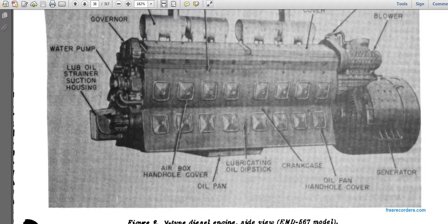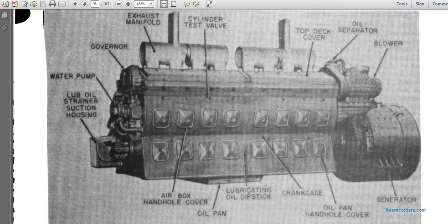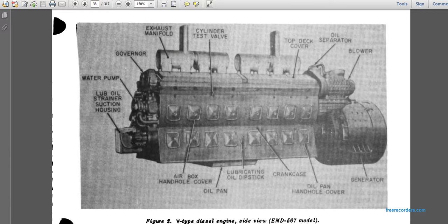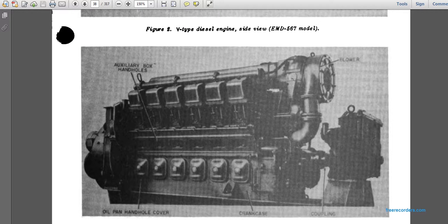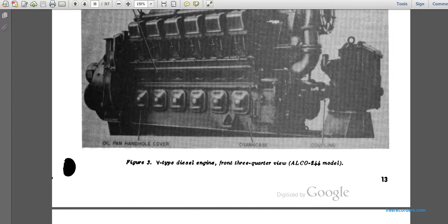Here is a typical V-type diesel engine. Components visible include the exhaust manifold, cylinder test valve, top deck cover, oil separator, blower, generator, oil pan, crankcase, oil dipstick, air box handhold cover, water pump, governor, and lube oil strainer suction housing. The front three-quarter view shows the auxiliary box, handhold, blower, crankcase, and oil pan cover.